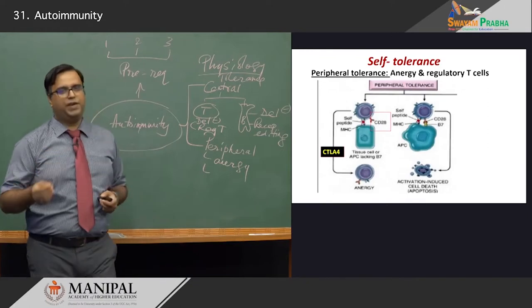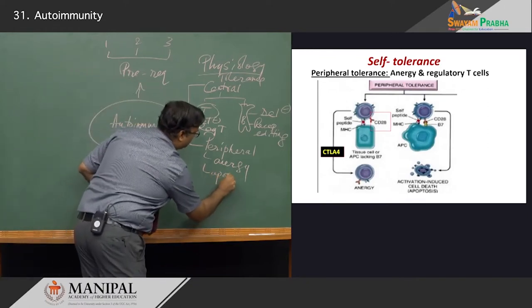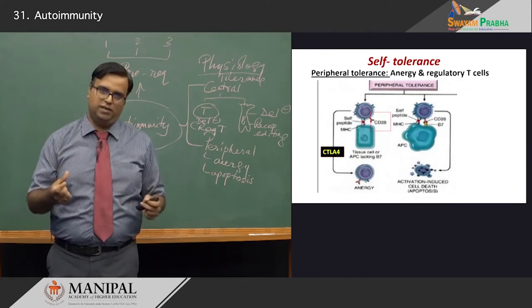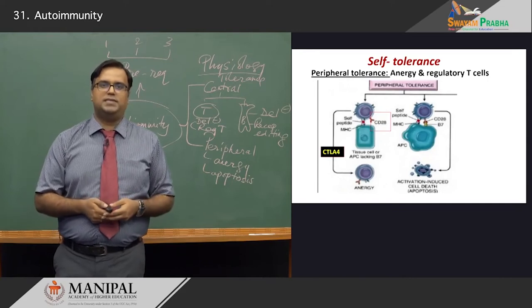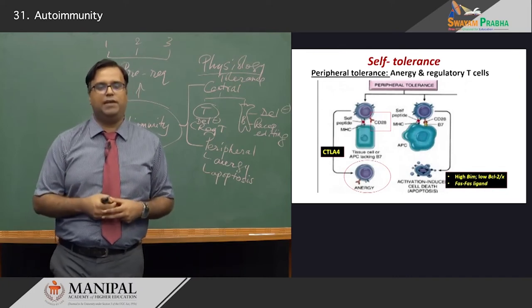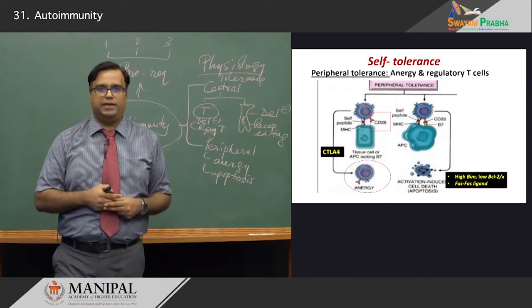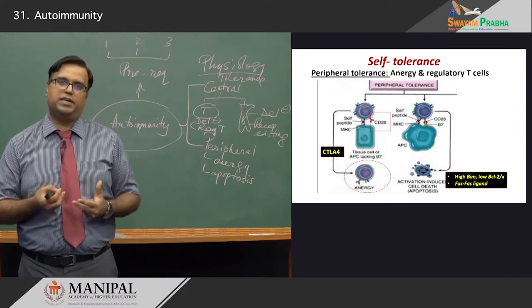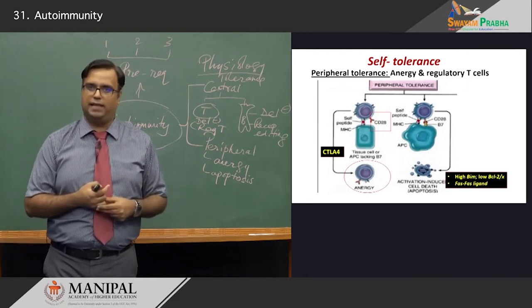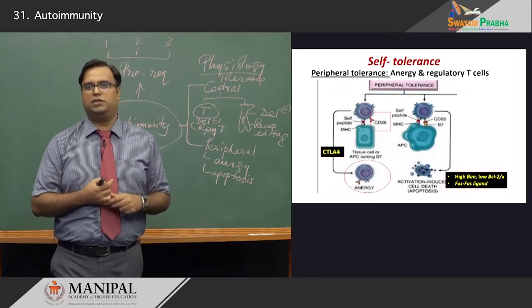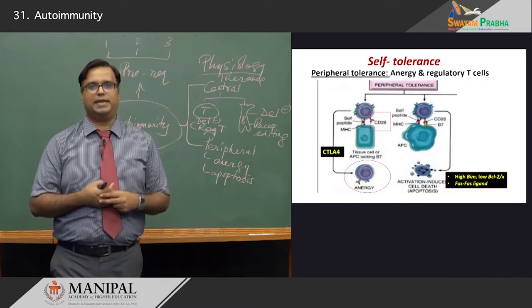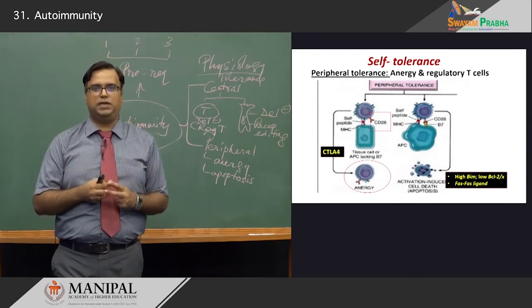Yet another important mechanism is apoptosis, or programmed cell death. Those cells which have escaped anergy will be rendered towards apoptosis. There is an upregulation of pro-apoptotic molecules which signal cell death, such as high levels of BIM, and downregulation of anti-apoptotic molecules such as BCL2 and BCLX. There is also upregulation of FAS-FAS ligand, which we know from our classes on apoptosis induces the death domain pathway. So all T lymphocytes that escaped anergy may be checked at this second point by means of apoptosis, bringing down the pool of self-reactive T lymphocytes.